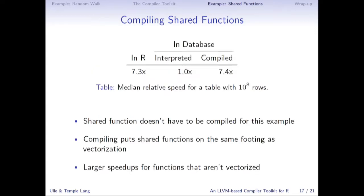There are packages that let you register regular interpreted R code with a database — for instance, the rsqliteudf package for SQLite. But the problem is it runs just as slow as any other R code. If you register an interpreted function and try to run it on 100 million rows, that's quite slow compared to pulling the data into R and running the function there. But we can't do that if the database is even bigger. Compilation comes in because if we compile the function and pass the compiled version to the database, we get a speedup almost as good as, or even better than, pulling the data into R — without having to move the data at all.